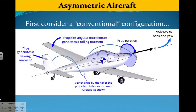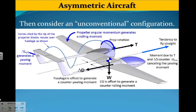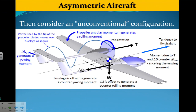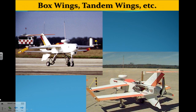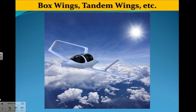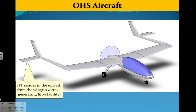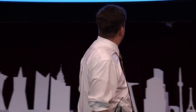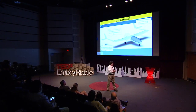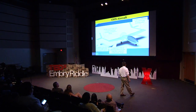Here we have an asymmetric aircraft — a very clever airplane. And here is a flying plank, a tandem wing aircraft, and another design with very promising characteristics. All of these airplanes look very unusual. Here is an OHS aircraft — the horizontal tail resides in the upwash from the wingtip and actually generates stability while generating upward lift. This is very unconventional for an aft-tail configuration.